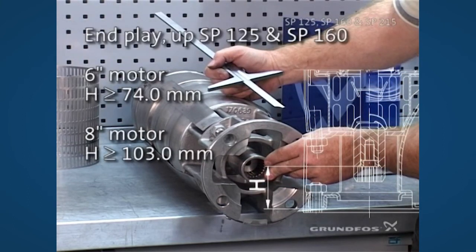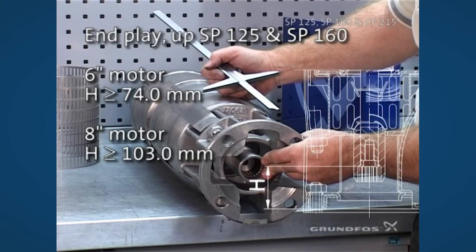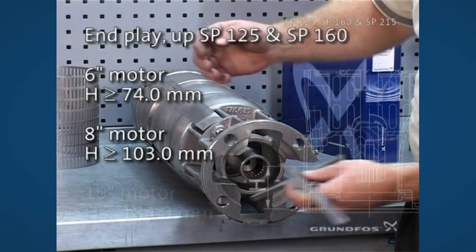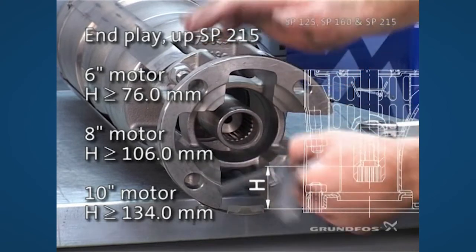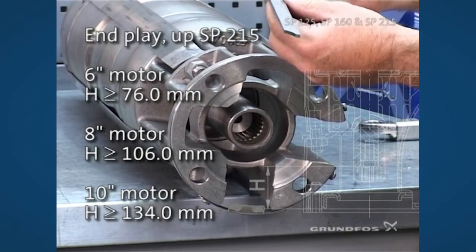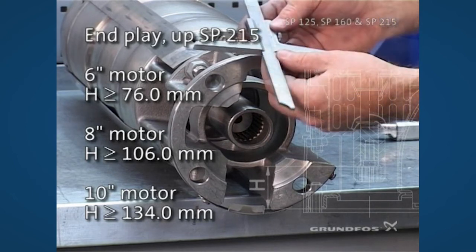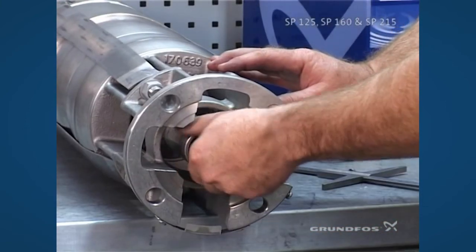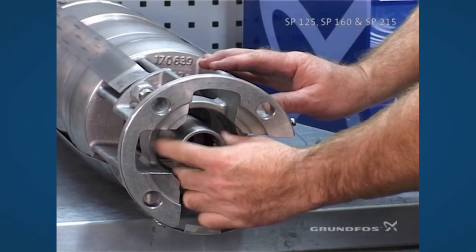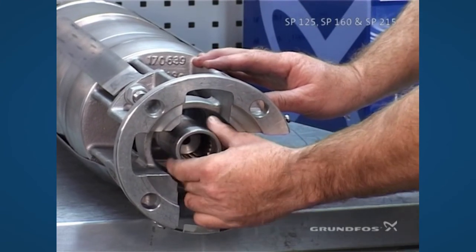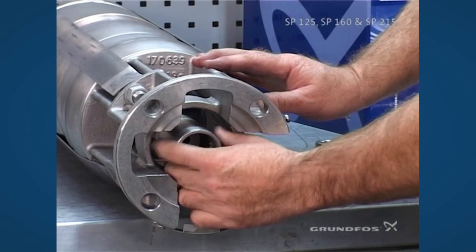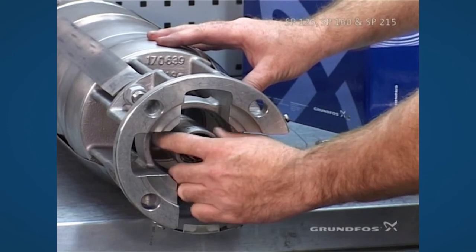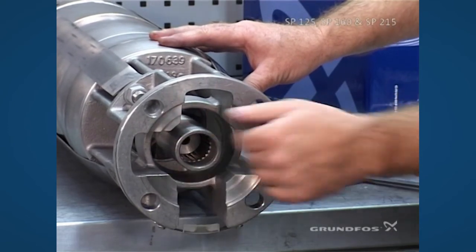Then simply push the shaft upward and take the up travel in the unit. Re-secure the screw and remove your depth vernier. Here the minimum up is 103. Now we can check our rotation. On the smaller units you can do this by hand. On the larger units it may require a specialty tool made out of an old shaft with a handle on it. You want to make sure that there are no metal to metal noises while you're rotating it. We have good rotation at this point.